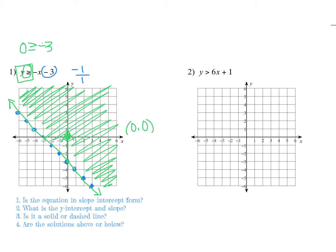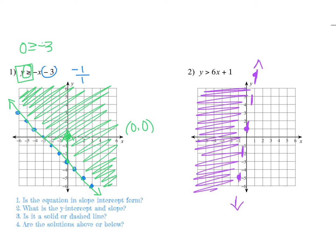For example two: it is in slope-intercept form. The y-intercept is one, with a rise of six and run of one — or fall six and go left one. It's just greater than, not greater than or equal to, so it's a dashed line. For a steep line, put your pencil on the y-intercept and look for y-values that are bigger — go up. Shade above the line, even though points lower on the page may visually appear below, they're above the line because it's angling in a positive direction.